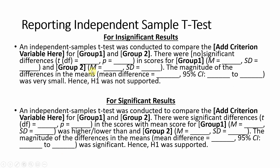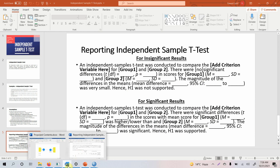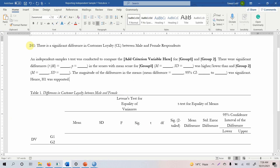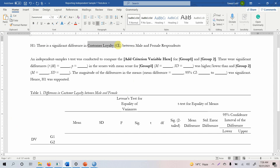There are two reporting templates — one for insignificant results and one for significant results. The problem being assessed here uses the hypothesis H1: there is a significant difference in customer loyalty between male and female respondents. The categorical variable is gender with two categories, male and female, and the dependent continuous variable is customer loyalty.